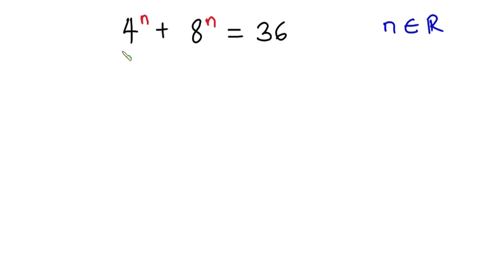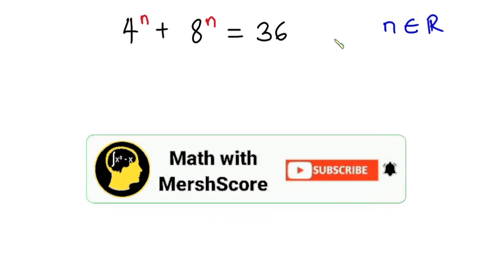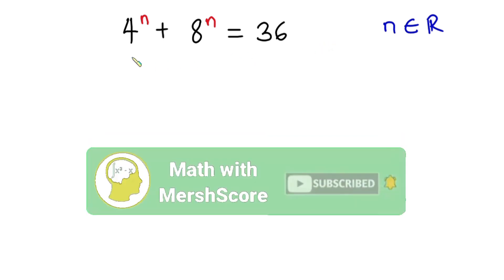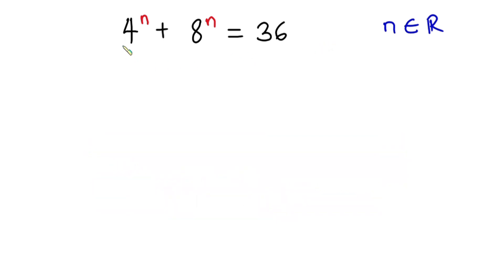Hello everyone. In this video we have this interesting problem: 4 to the power n plus 8 to the power n is equal to 36, and we have to find the value of n, where n is a real number. Before we begin, as always, pause the video and try first. If you are new here, please consider subscribing and don't forget to like this video. Now let's get started.